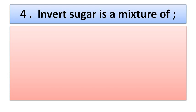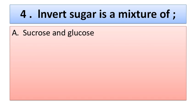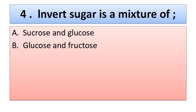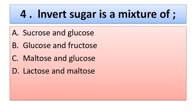Question number four: invert sugar is a mixture of — option A: sucrose and glucose, option B: glucose and fructose, option C: maltose and glucose, option D: lactose and maltose. The correct option is option B, glucose and fructose.